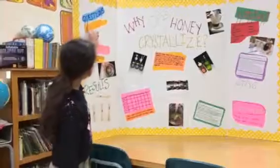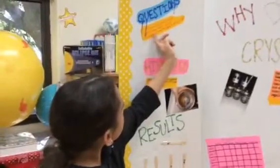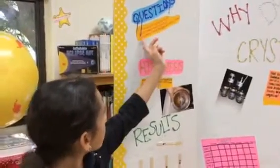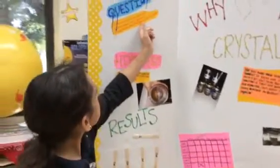My questions were: number one, which one did you crystallize first? The second one was, what makes honey crystallize? And three, what factors change the speed at which it crystallizes faster?